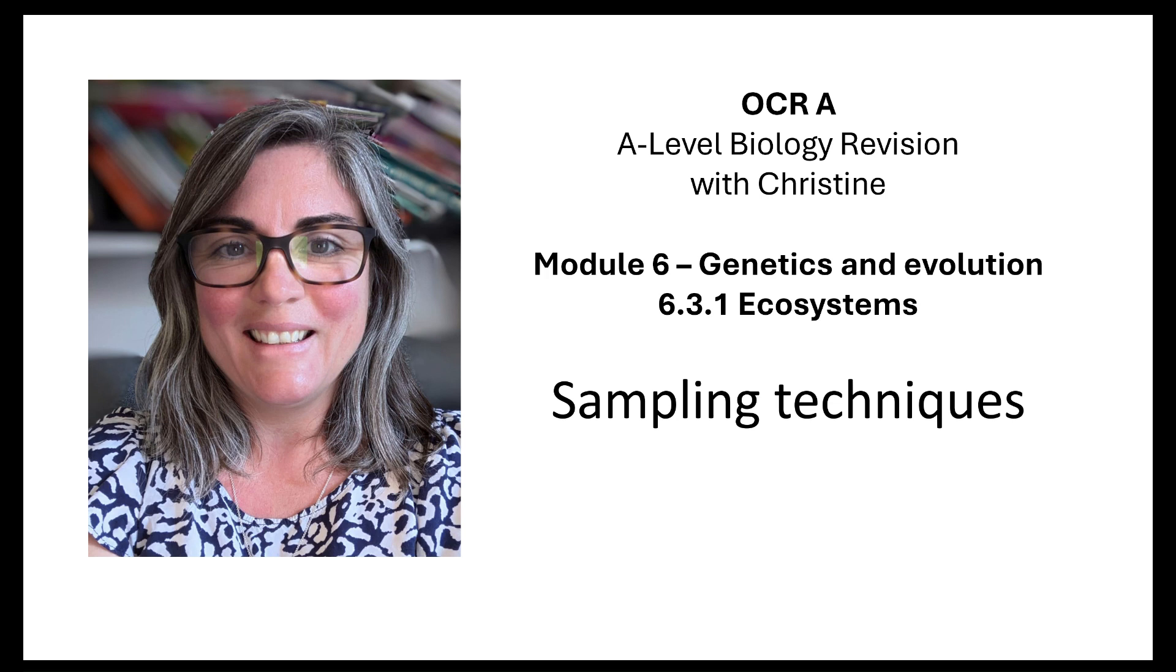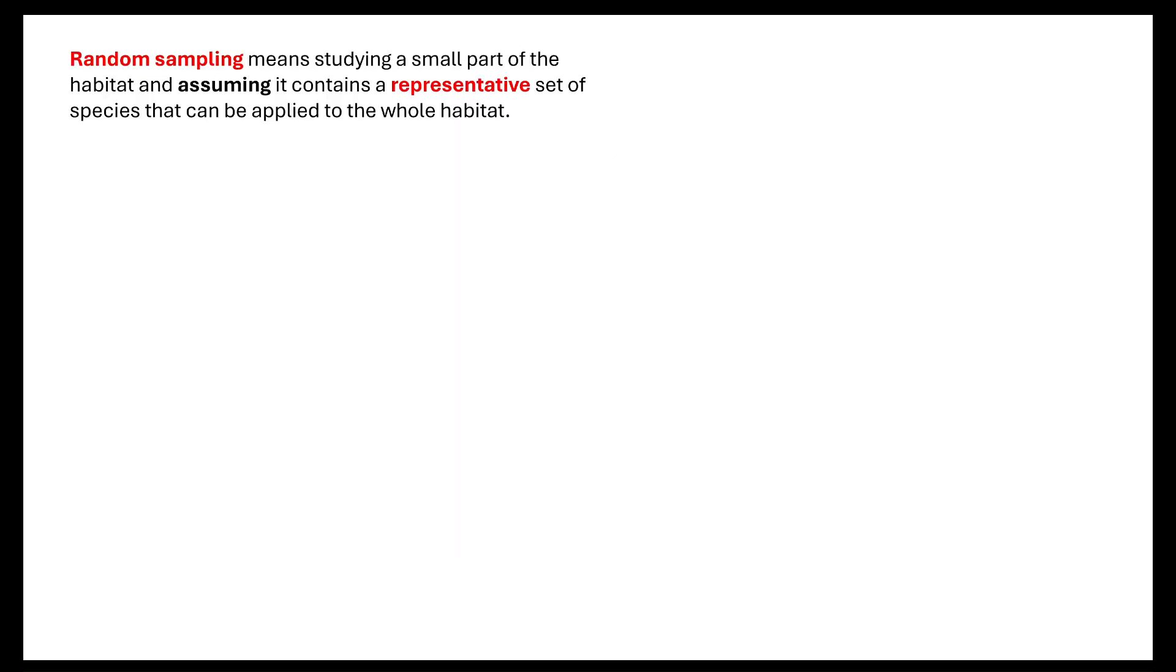Hi and welcome to my OCR A-level biology revision session with me Christine. Today's lesson I want to look at sampling techniques. Random sampling means studying a very small part of a habitat and assuming it contains a representative set of species that can be applied to that whole habitat.